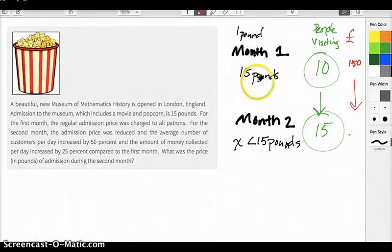Month one, 15 pounds for each person who went to the super cool mathematics museum. However, month two, they reduced the price. The number of people increased by 50%, right? If you like, you could use 100 and 150 if you prefer a better number. But the number of people increased 50%. And that would mean in our case, from 10 to 15. If the amount of money that they collected in pounds increased 25% from month one to month two,